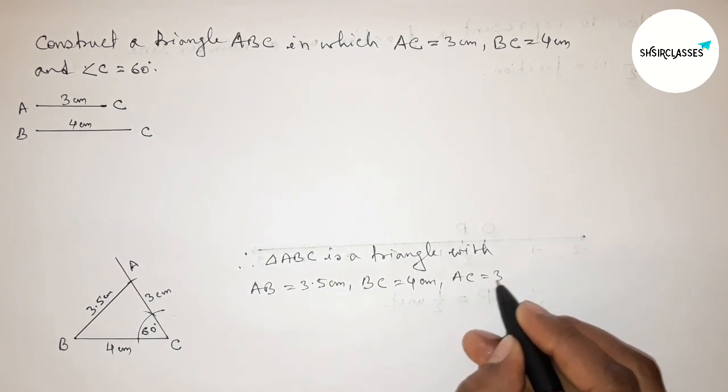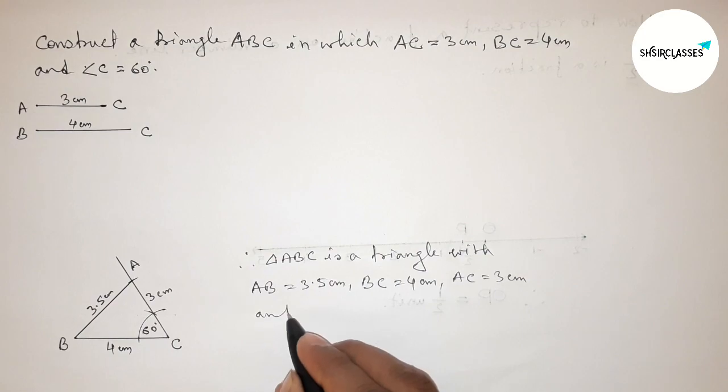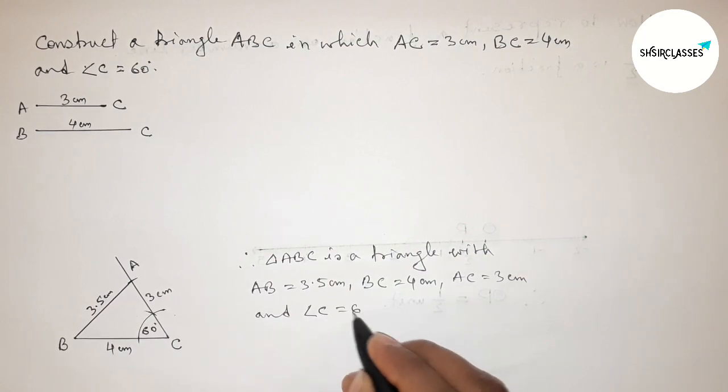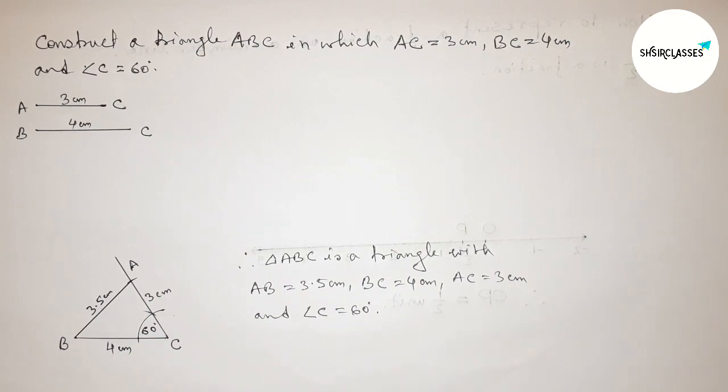And one angle, angle C equals 60 degrees. So by this way you can construct triangle ABC. That's all, thanks for watching.